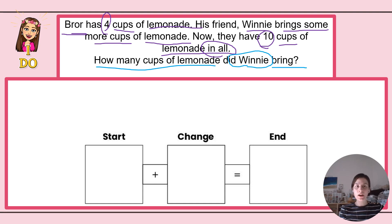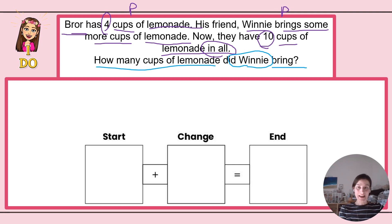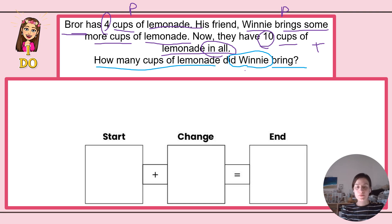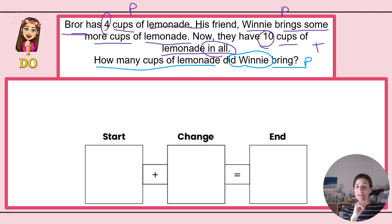My question is: how many cups of lemonade did Winnie bring? I know that Broar has four cups of lemonade — that's a part. I know that Winnie brings some more cups of lemonade, but I just don't know how much. And lastly, "in all" is code for total. I now have a total of 10 cups of lemonade. I'm trying to find my missing part — how many cups of lemonade did Winnie bring? Now I'm going to plug all of this into my start, change, end method. So I'm in step two: plan it.